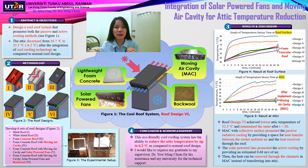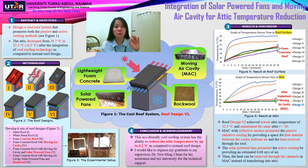The focus of this project is to design a co-roof system that promotes both passive and active cooling methods. The co-roof system integrates lightweight foam concrete roof, moving air cavity, solar power fans, and rock wool. The attic temperature at 30 minutes of heat exposure decreases from 38.7 degrees Celsius to 32.5 degrees Celsius after the integration of this co-roofing technology.